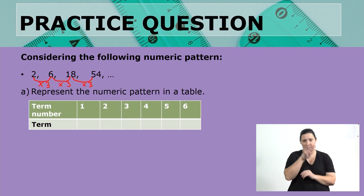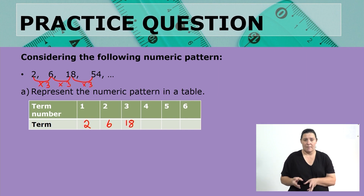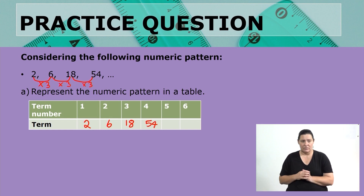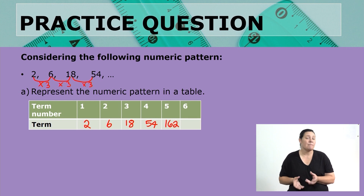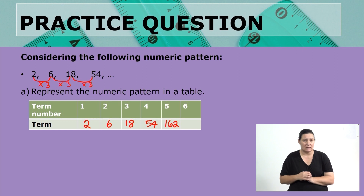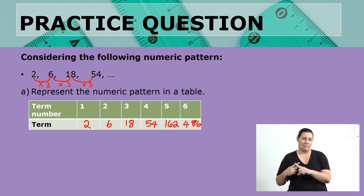Let's represent that in a table. The first term is 2; multiply by 3 gives 6; multiply by 3 gives 18; multiply by 3 gives 54. Those numbers were already given in our pattern. The next number is 54 multiplied by 3, which is 162. And from 162, multiplied by 3 gives 486. So with this pattern we are just multiplying by 3.